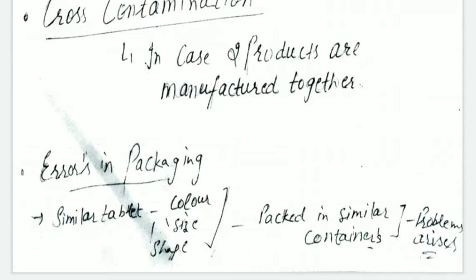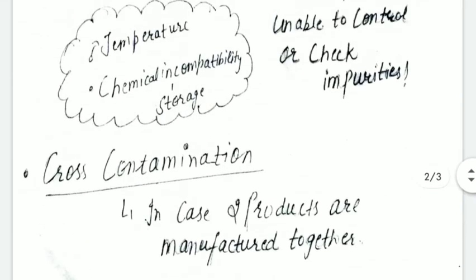Another important factor is storage. Temperature is a major factor - where you are making and storing the product matters. Chemical incompatibility is also important. When you're carrying tablets and your storage is wrong, problems can occur. Sometimes you see tablets with instructions to store in a dry place. If you don't store it properly, it can cause impurities in your product. So storage is very important - if everything else is correct but storage is wrong, there can still be issues.